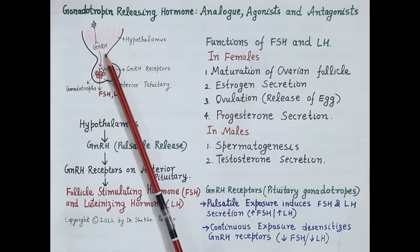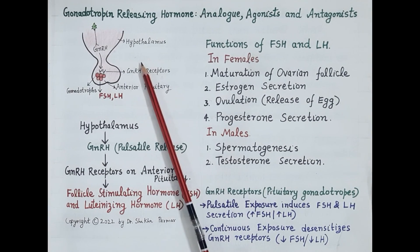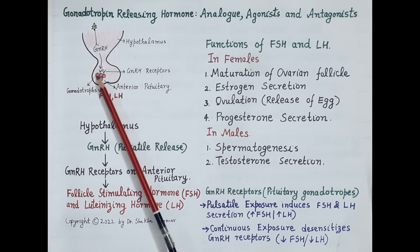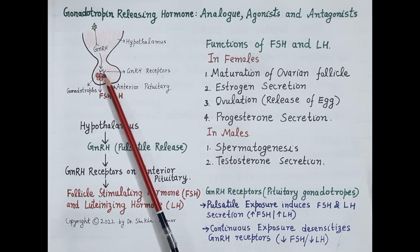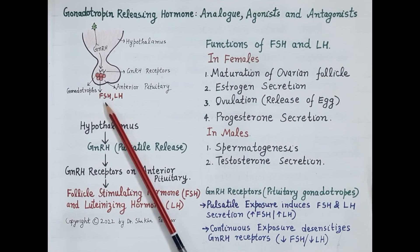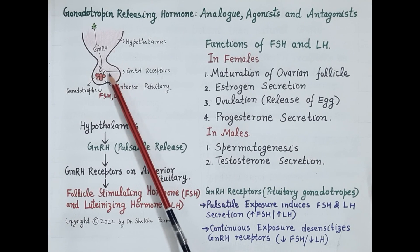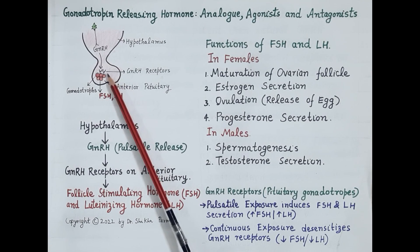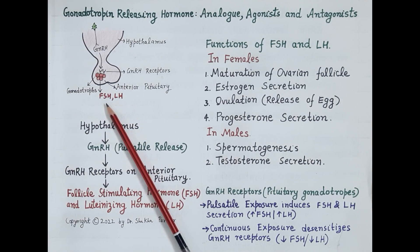Deficiency of GNRH causes problems like infertility, hypogonadism, and delayed puberty, while excess GNRH can cause disorders like precocious puberty, breast cancer, and prostate cancer. Since GNRH is released in a pulsatile fashion, pulsatile or intermittent stimulation of GNRH receptors by drugs mimics natural stimulation and induces increased release of FSH and LH, whereas continuous stimulation of these receptors desensitizes them, reduces their response, and causes reduced secretion of FSH and LH.